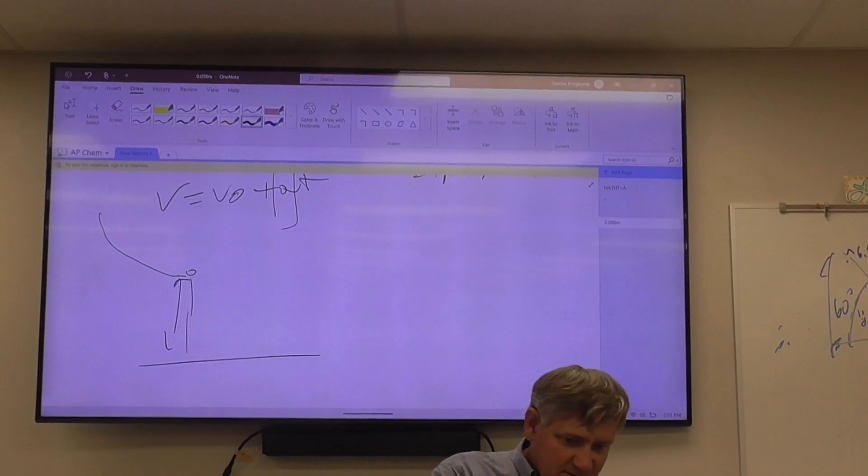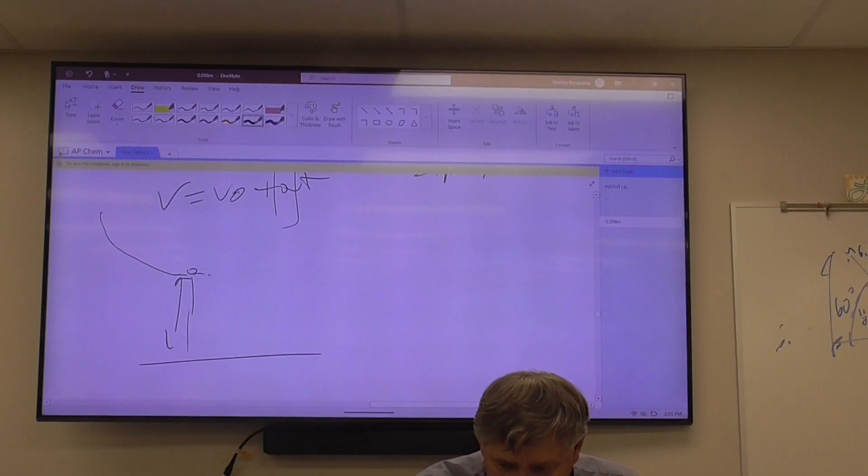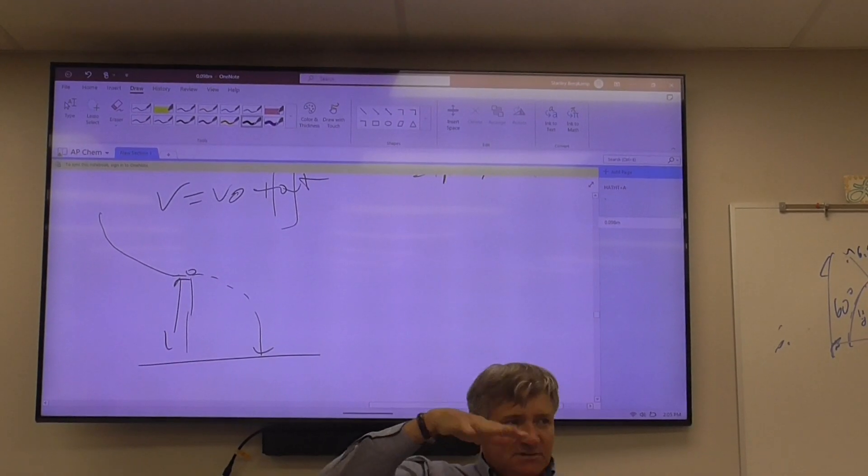Now getting the range is a little sketchy. So what you want to do is roll that down and get an idea of where it's going to land, okay? Get an estimate.